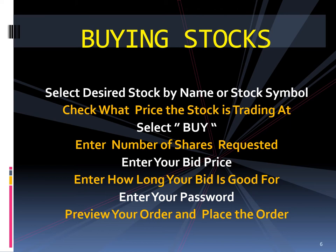Now enter how many shares you are buying and what price you wish to bid for the stock. Under price, you are given the option of accepting the current market price or choosing a limit and putting in a lower price bid. As soon as you select Limit, a window appears for you to enter the price you will offer. I always put in an amount below the current price being offered just to see what will happen. A 'Good Till' window allows you to enter the number of days you will leave this price open.